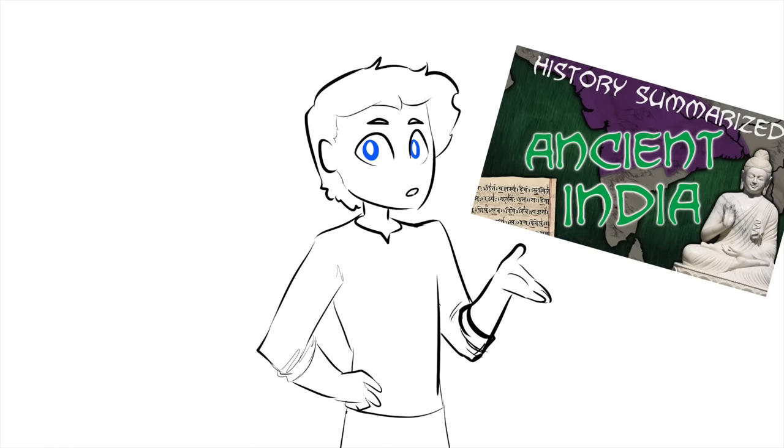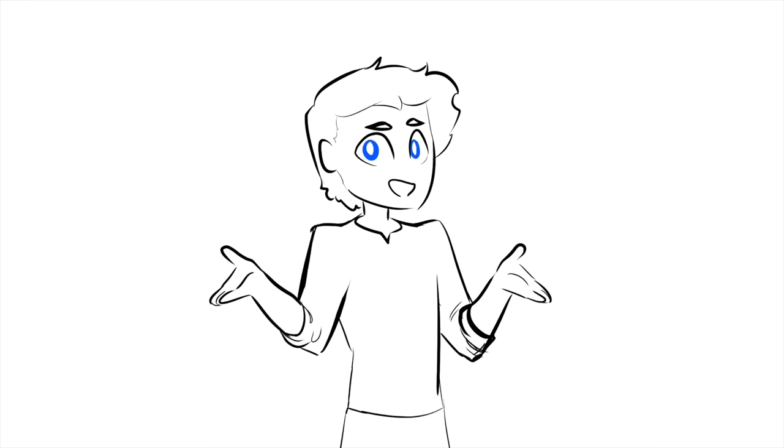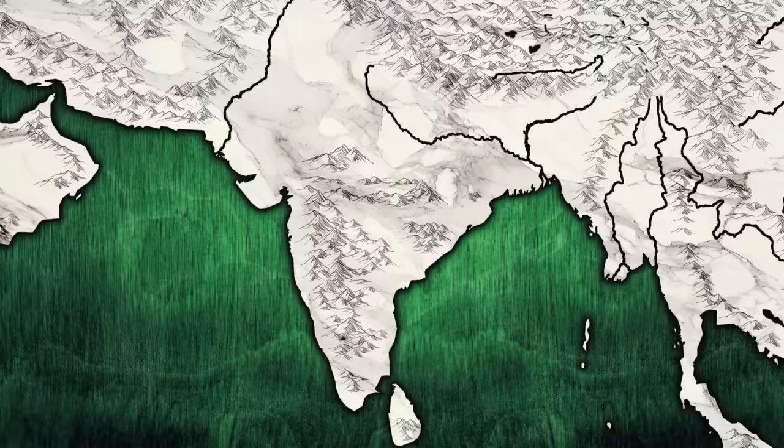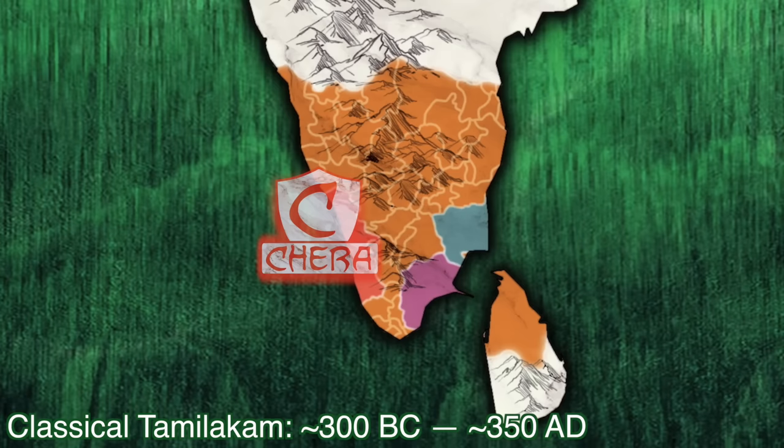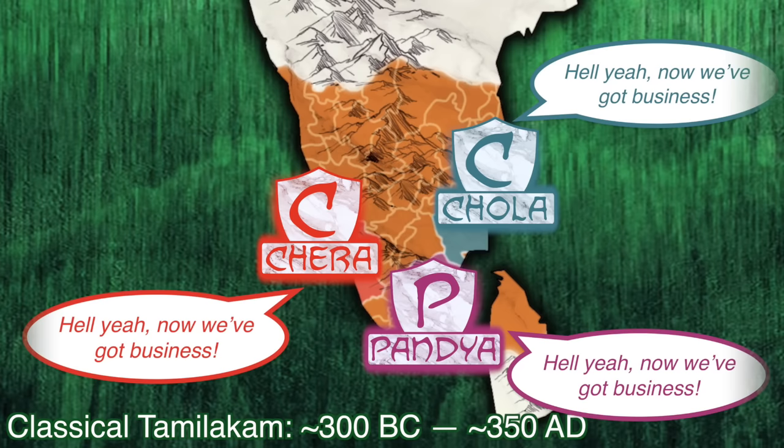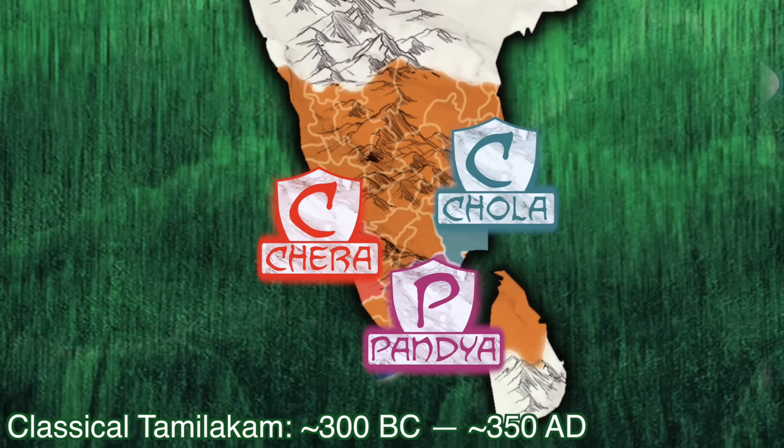Contrary to what my last video on Indian history might lead you to believe, southern India does, in fact, exist. So let's address that right now by taking a look at the Tamalakam at the tip of the peninsula. Starting way back before even the Maurya Empire, there were dozens of states nestled around the foothills of the Ghats. The Chera, the Chola, and the Pandya dynasties became known as the Three Crowned Kings, and though they remained fairly small through the classical period, they're possibly India's most successful merchants. With ready access to boatloads of spices, they were able to export their own wares as well as control the traffic through one of the world's busiest maritime trade routes.